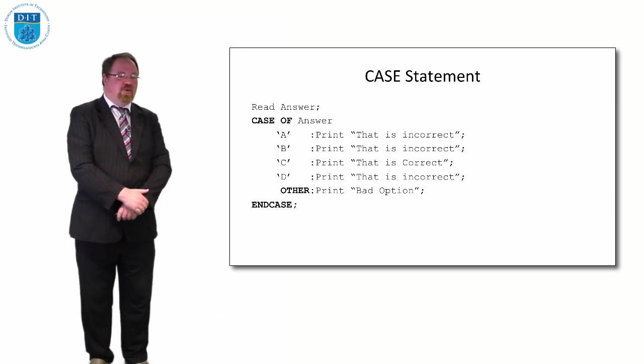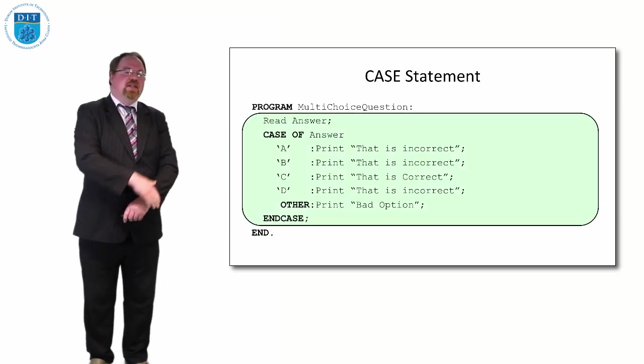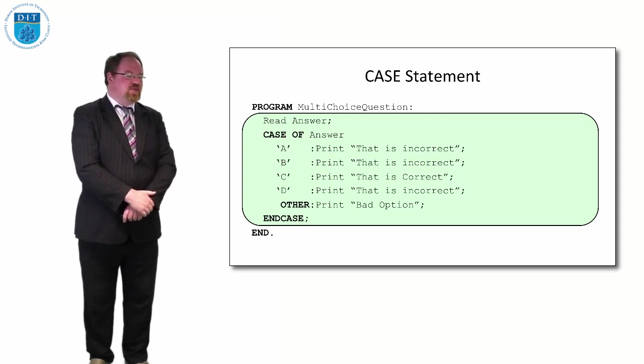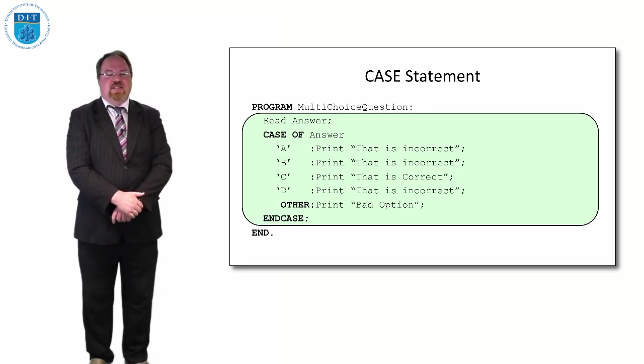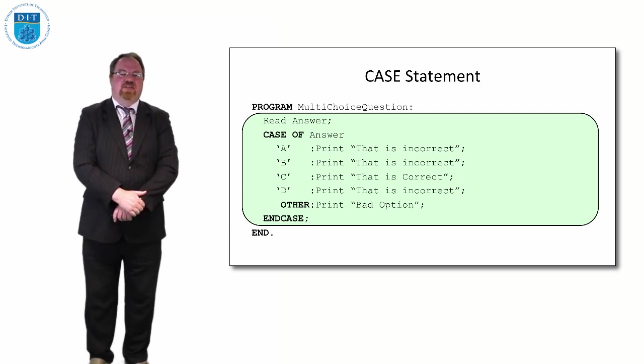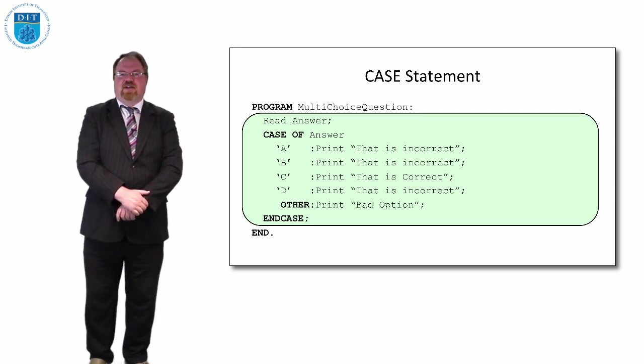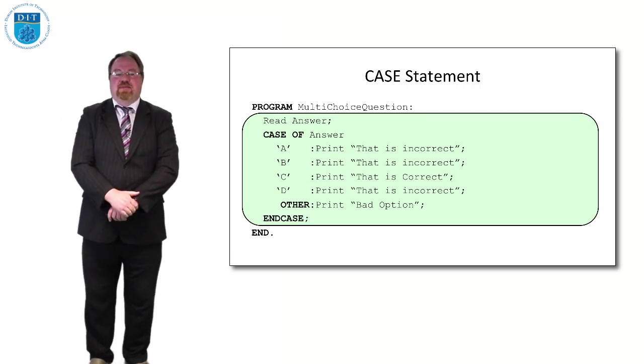If we want to put that in as a program, typically we'd put PROGRAM multi-choice question, the program title, colon. Then we'd read in our answer, and if the answer is A it's incorrect, if it's B it's incorrect, if C it's correct, if it's D it's incorrect. If they put in anything else we have this special word OTHER that says it's a bad option. We could be kinder and say I'm sorry, I think you've selected a wrong value, do you wish to go back or something like that. We close a case statement with ENDCASE and we close the program with END and a full stop.